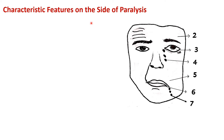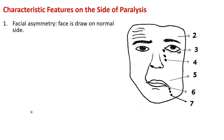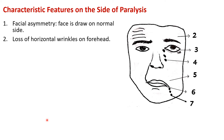Suppose the left facial nerve is compressed just above the stylomastoid foramen — the muscles of the left side of the face will be paralyzed. The first sign is facial asymmetry: on the normal side, the face is drawn due to the unopposed action of the muscles there. The second sign, moving from above downward, is loss of horizontal wrinkles on the forehead, which will be absent on the paralyzed side.